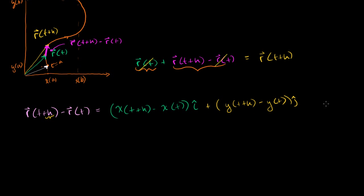I said at the beginning that I want to find the instantaneous change with respect to t. So I want to divide this by h — our change in t is h, the difference between t plus h and t. We're dividing our vector by a scalar h, which just means dividing each component by h. This, for any finite h, tells us how much our vector changes per unit of h.